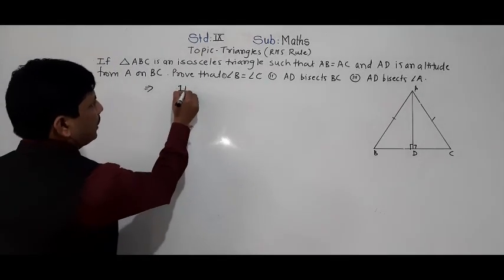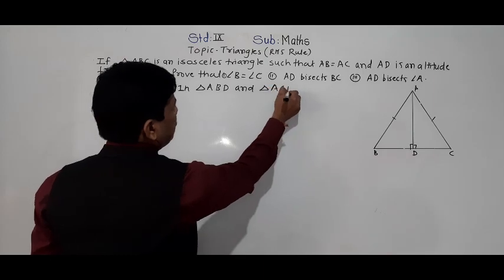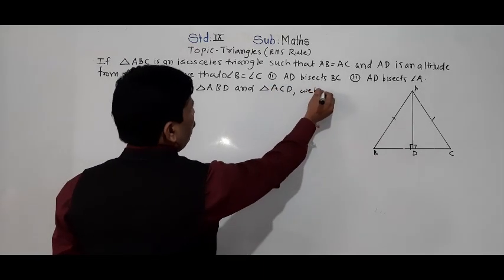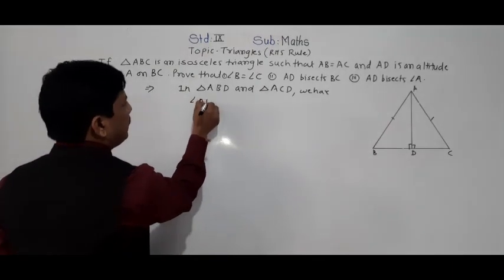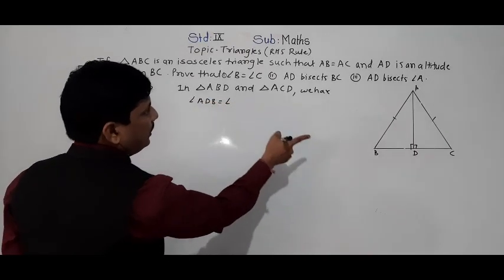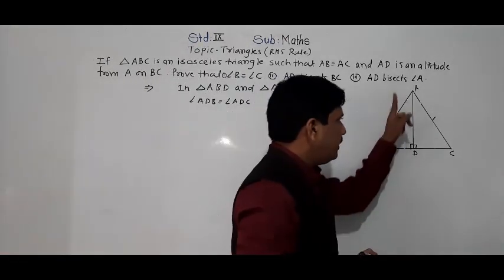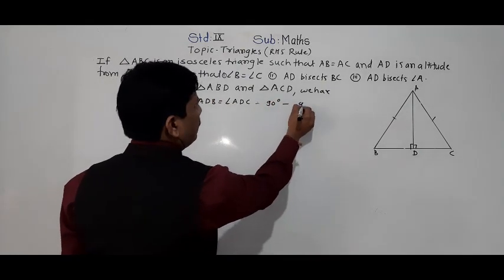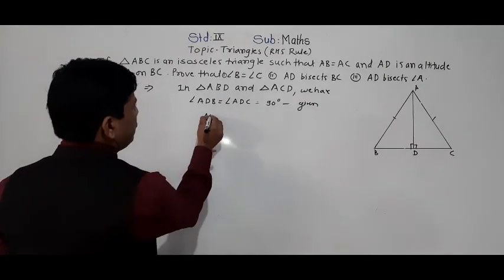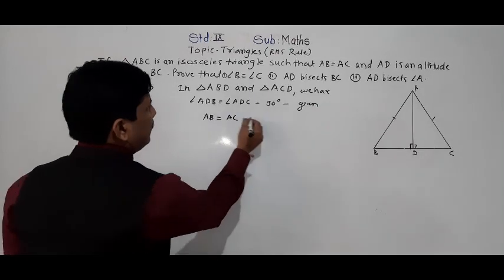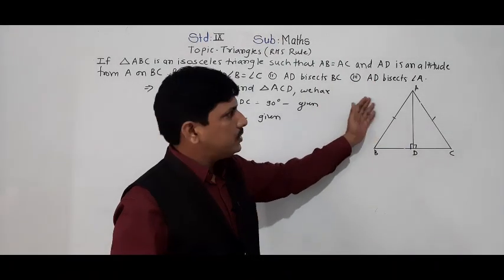In triangle ABD and triangle ACD: the first condition is angle ADB is equal to angle ADC, both equal to 90 degrees, because AD is the altitude — that is given. The second thing: AB is equal to AC, which is also given. AB and AC are both hypotenuses of the respective triangles, and they are equal.